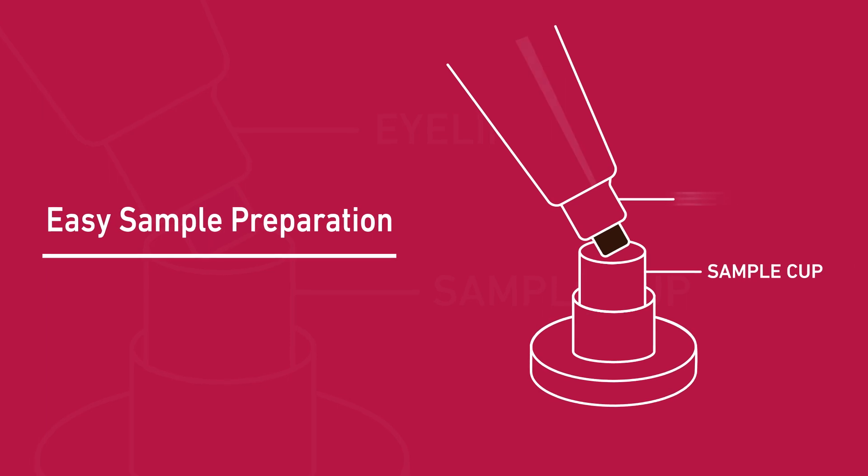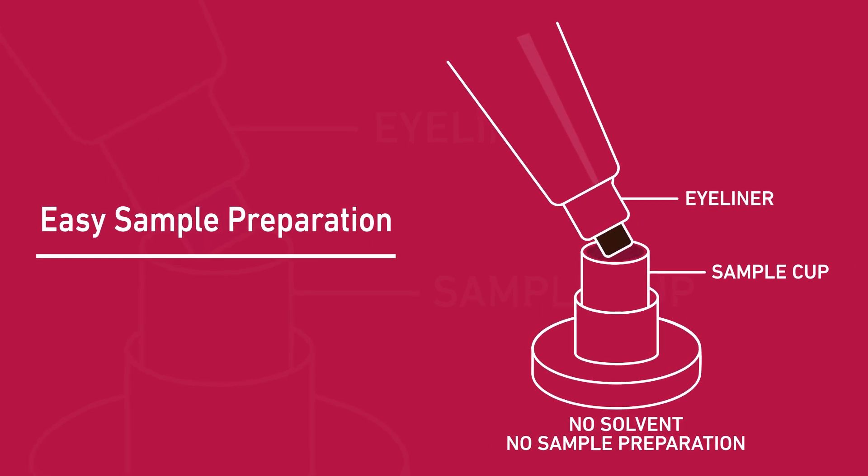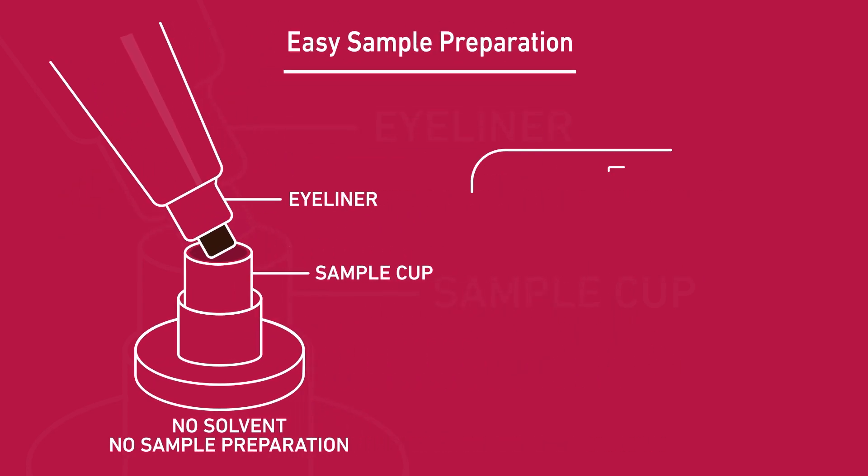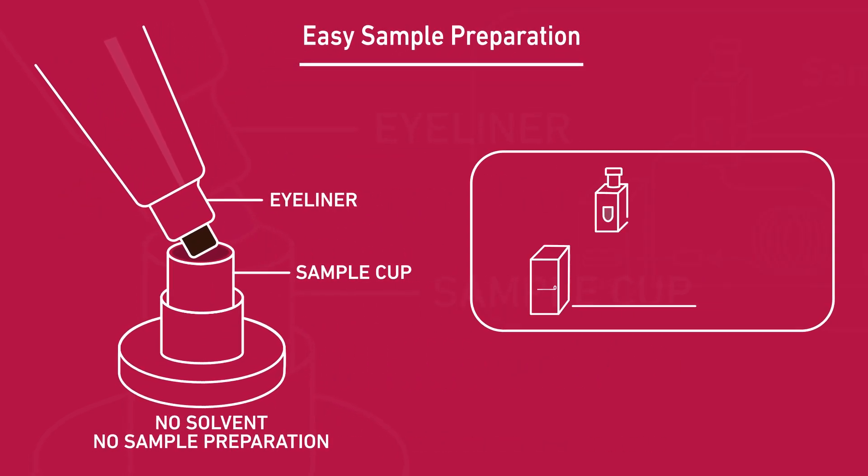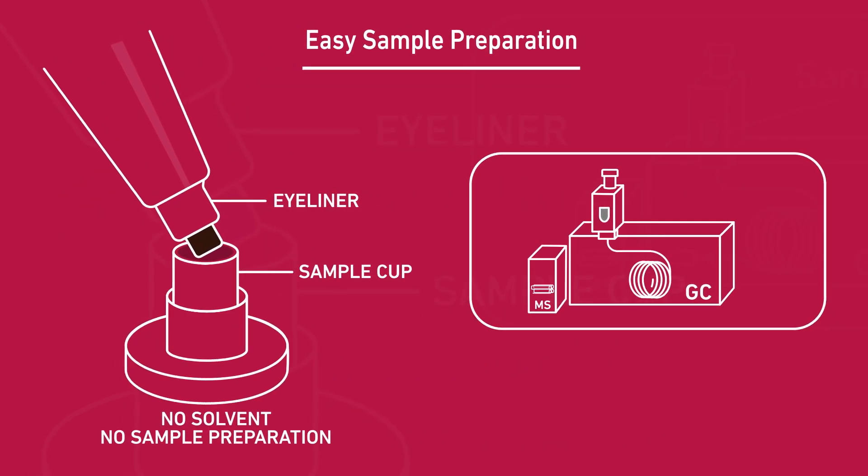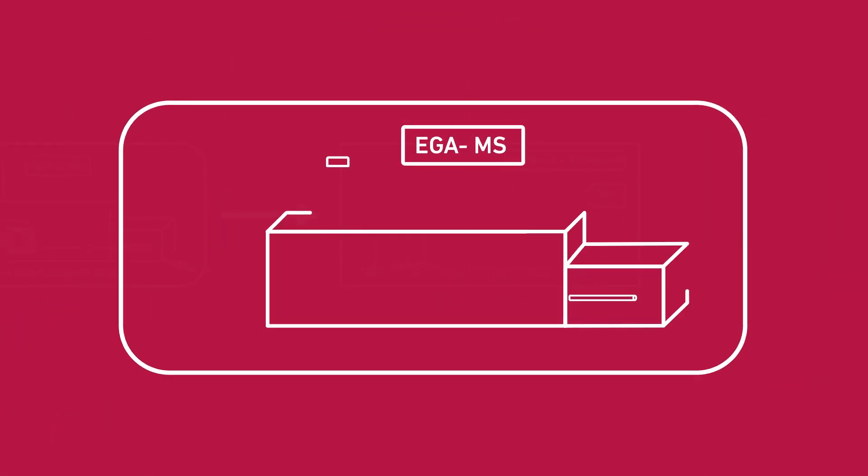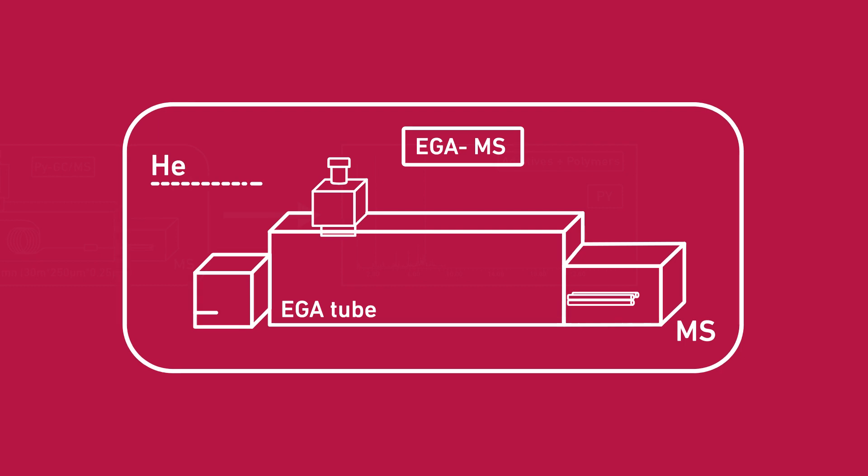To demonstrate how these different modes of operation of the multi-mode pyrolyzer work, material characterization of a commercial eyeliner is shown. The eyeliner was placed directly into the inert sample cup, without any sample preparation or solvent extraction. EGA is then performed using the deactivated tube.